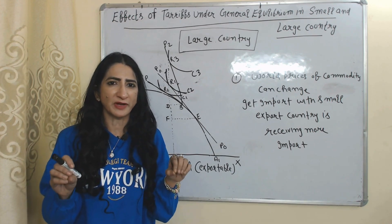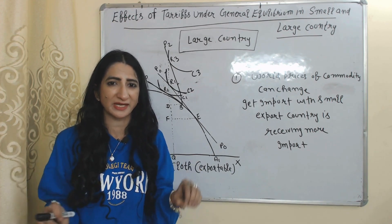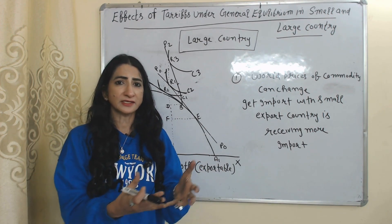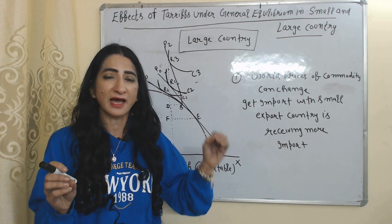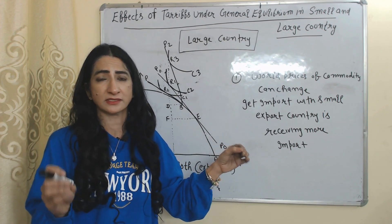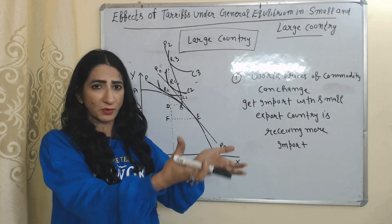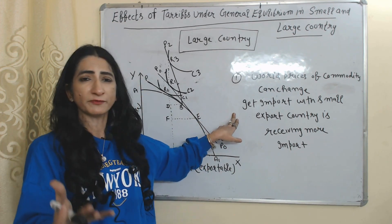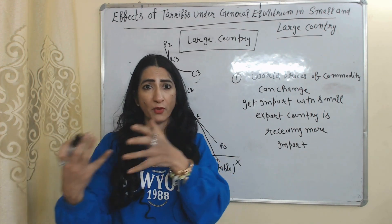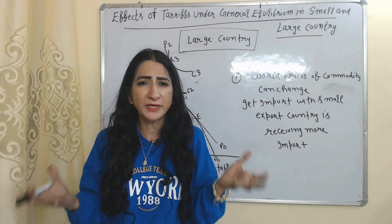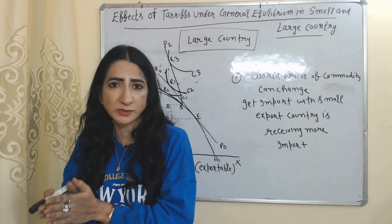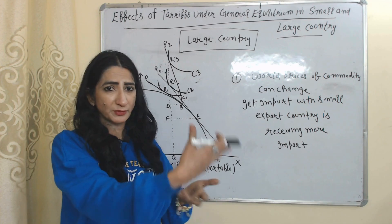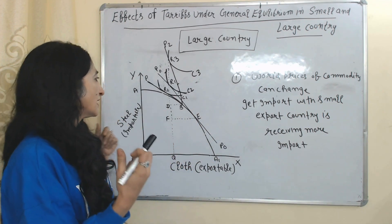Now we are going to talk about a large country. As we know, tariff has a diverse adverse effect in the case of a small country, but tariff has a good effect in the case of a large country. Why? Because a large country imports in such large quantities that it can change world prices. When the demand for a large country's imports reduces, world prices of imports will also reduce. If world price of imports reduces, we can receive more imports compared to exports, meaning terms of trade has improved.